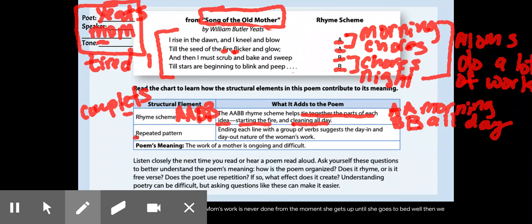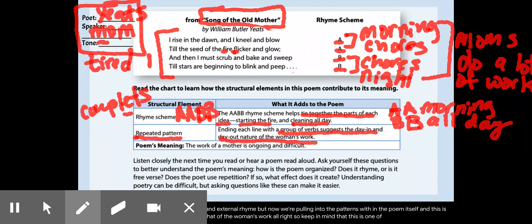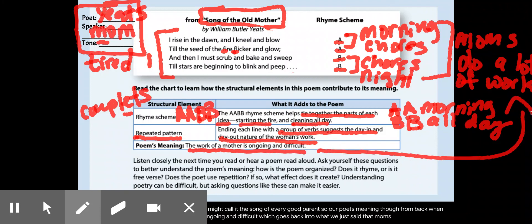Well, then we get a repeated pattern. So, there's that repetition that we were talking about. I know normally when we talk about repetition, previously, we used alliteration and assonance and rhyme, internal and external rhyme. But now, we're pulling into the patterns within the poem itself. And this is going over how these groups of verbs suggest the day in and day out nature of the woman's work. All right? So, keep in mind that this is one of those things that we call classic literature that was written over 100 years ago. So, now it would be the song, if we were to rewrite this today, we might not necessarily call it the song of the old mother. We might call it the song of every good parent. So, our poem's meaning, though, from back when this was written, is that the work of a mother is ongoing and difficult, which goes back into what we just said, that moms do a lot of work.